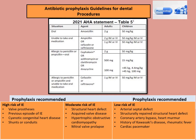Procedures that do not involve blood, like general restorations, normal nerve blocks or injections, and infiltrations, will not require antibiotic prophylaxis. But where you have involvement of blood — for example, when you give the injection directly into the sulcus or the PDL — it will require antibiotic prophylaxis. Placement of orthodontic bands, appliances, taking impressions, radiographs, and shedding of primary teeth do not require antibiotic prophylaxis.